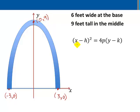So using this equation (x - h)² = 4p(y - k), I'll plug in my vertex: h is zero, k is nine.